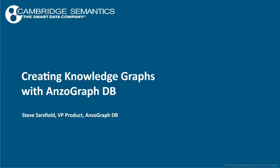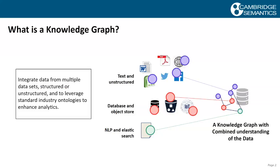One of the use cases for using a graph or an RDF triple store with property graph is that you can create a knowledge graph. Knowledge graphs are a really great thing — not all graph databases are really good at creating them. A knowledge graph is put together when you want to integrate data from multiple datasets, both structured and unstructured, and leverage ontologies and standards to put that data together.